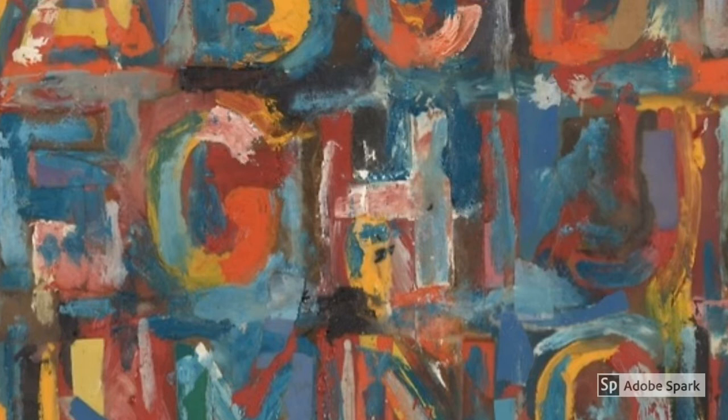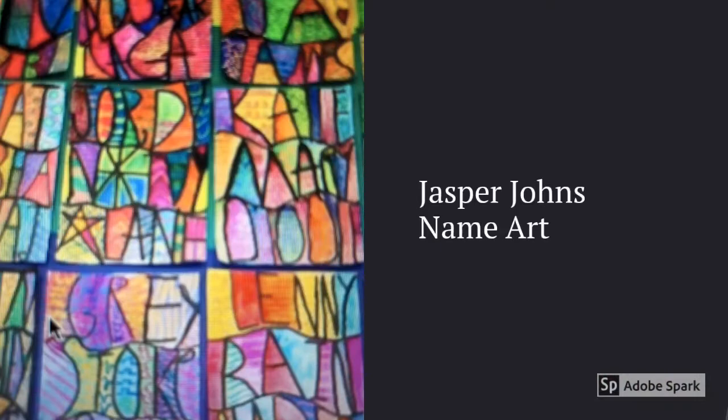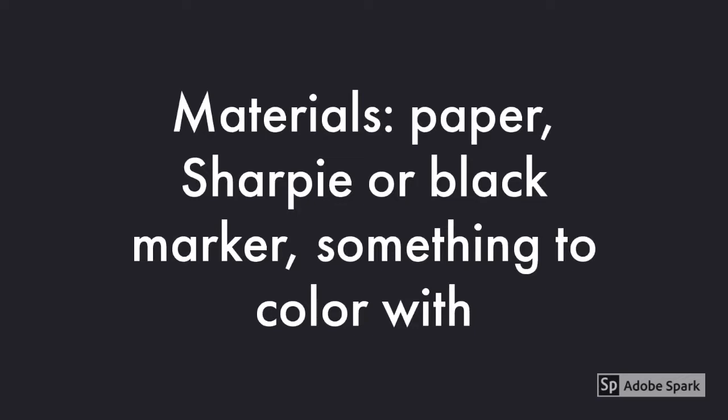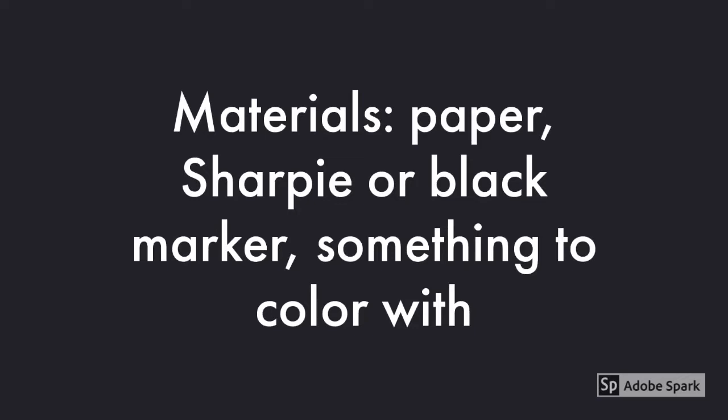Here's Jasper Johns' famous painting called Alphabet that's in the Art Institute of Chicago. Can you see how the letters are blended with the background? Ours isn't going to look exactly like this but it's definitely going to inspire our work.